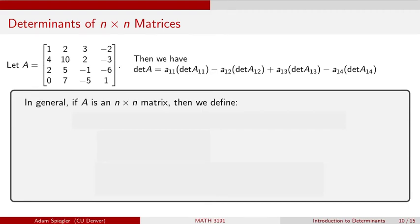Okay, welcome everyone. So now that we've discussed determinants for 2x2, 3x3, 4x4 matrices, let's extend this definition to any square nxn matrix.